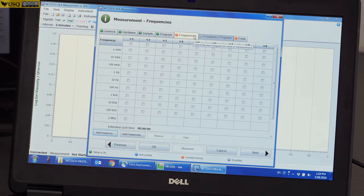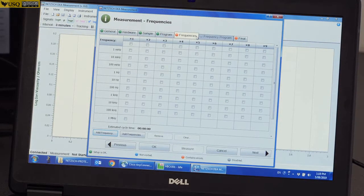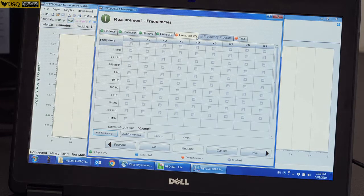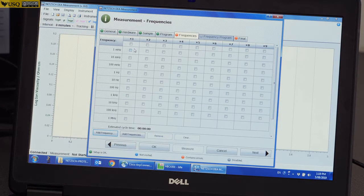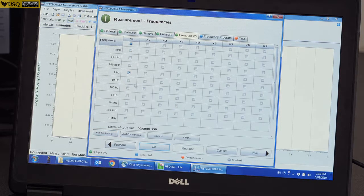Frequency. In this tab, we have to choose what frequency we need for the measurement. For a start, if you have no idea what frequency you need to choose, I usually go for a few frequencies that I will suggest. For example, go for 1 hertz, 10, 100.